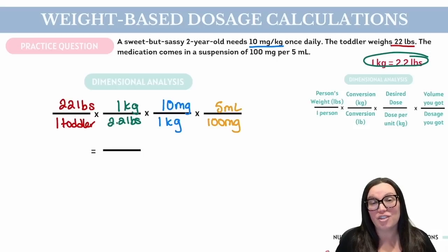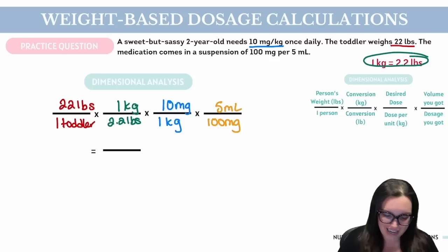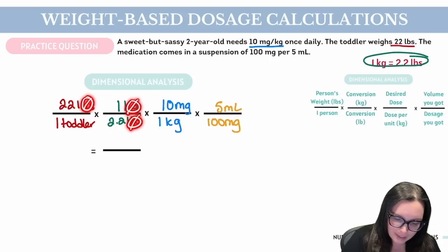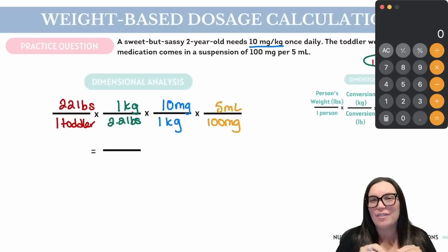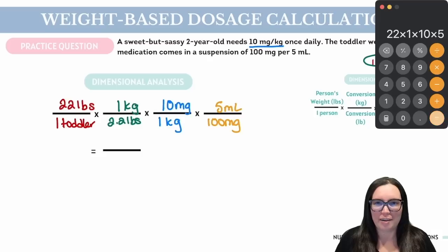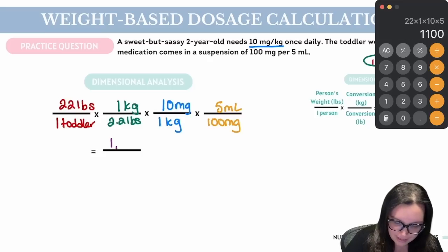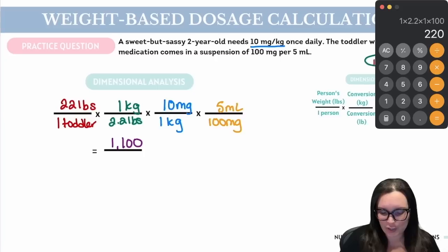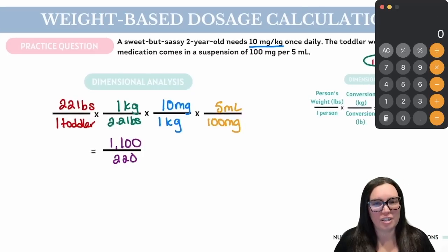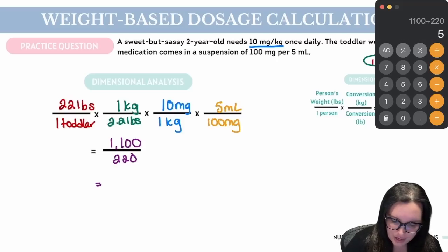We're going to make sure that everything lines up so we're only left with mLs for the toddler. Pounds cancels out pounds, kilograms cancels out kilograms, milligrams cancels out milligrams, leaving us with mLs for our toddler. Now we do a little math: multiply everything on the top — 22 × 1 × 10 × 5 = 1,100. For the bottom: 1 × 2.2 × 1 × 100 = 220. Dividing 1,100 by 220 gives us the correct answer of 5 mLs.